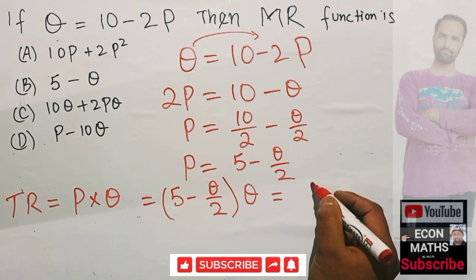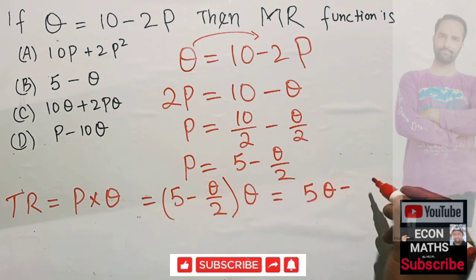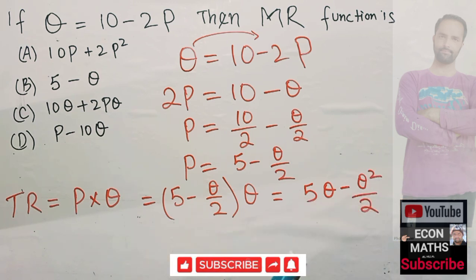This comes out to be 5Q - this Q is multiplied to each of these terms - so we have 5Q minus Q times Q, which is Q square upon 2. This is our total revenue.